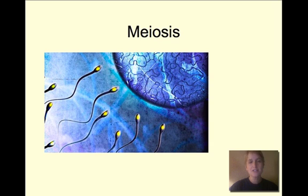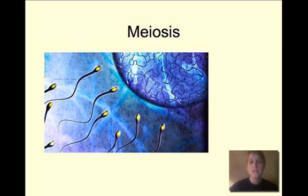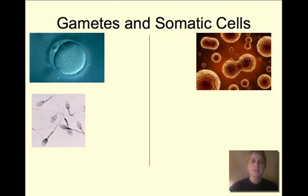Hi, I'm Kim McIntosh and I teach biology at Shadow Mountain High School. In this presentation we're going to talk about a different type of cell division called meiosis. Meiosis is the process that creates the gametes — it creates the sperm or the egg cell so that sexual reproduction can occur.